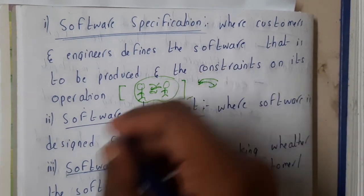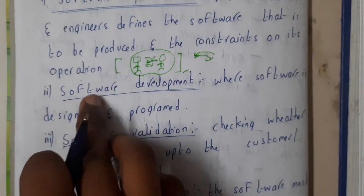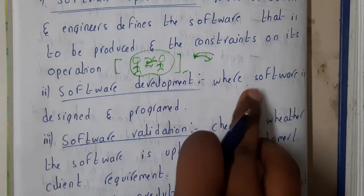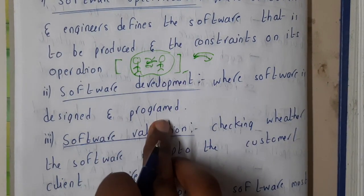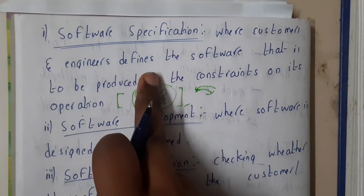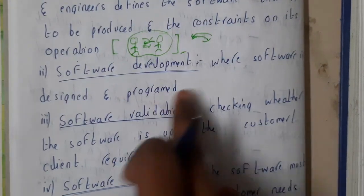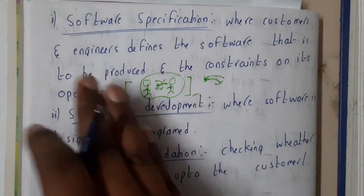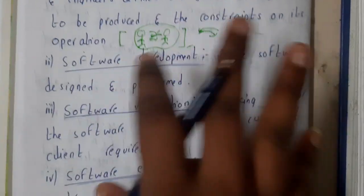Then software development, where the software is designed and programmed. Basically, this step is divided into multiple parts. About those things we'll be discussing in further lectures. This is just an overview.